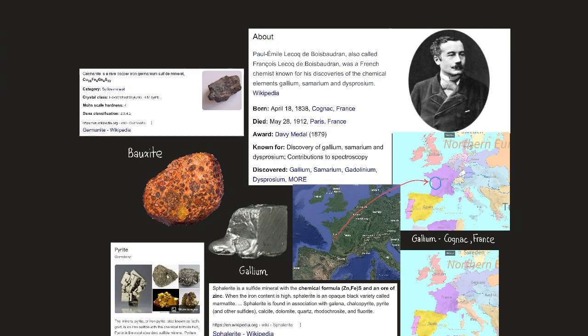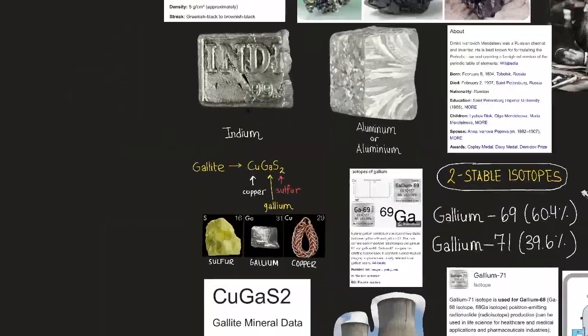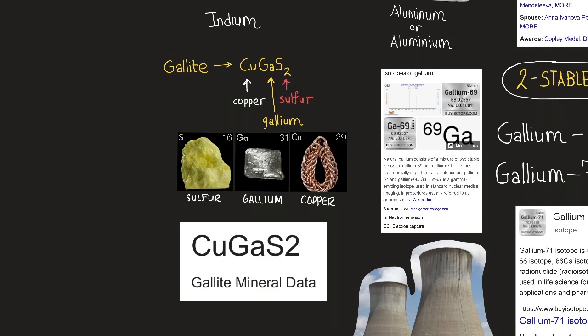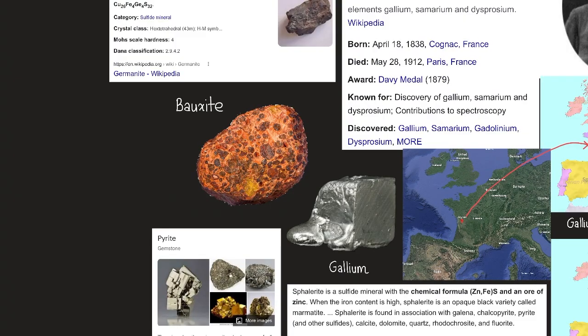So though widely distributed at Earth's surface, gallium does not occur free or concentrated in independent minerals except for gallite, which consists of the elements copper, gallium, and sulfur, which is rare and economically insignificant. It is extracted as a byproduct from zinc blend, iron pyrites, bauxite, and germanite.